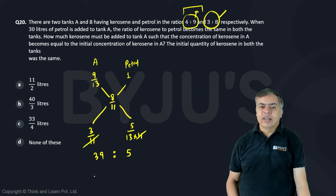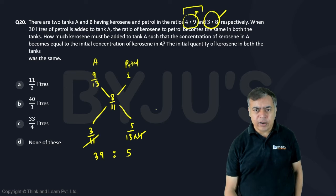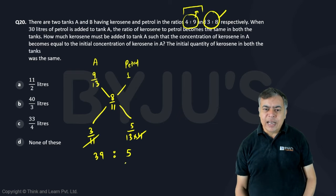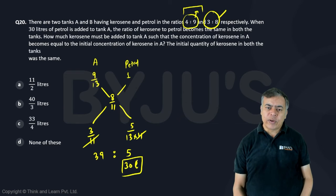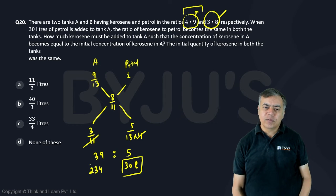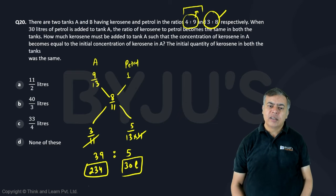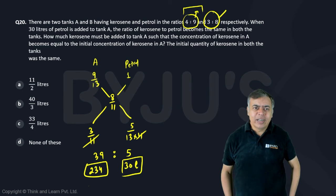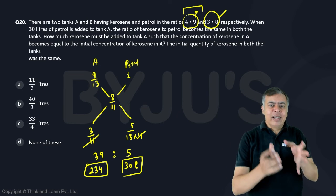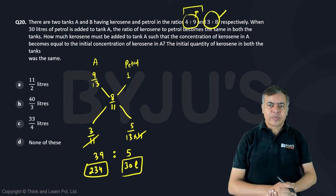So I am adding 39 is to 5, where 5 unit is given as 30 litres. So this was given 30 litres, so 5 into 6, so 39 into 6, it should be 234. So 234 litres was there initially in tank A.